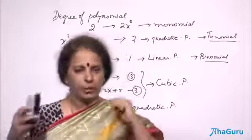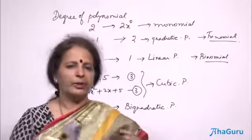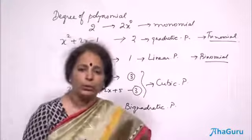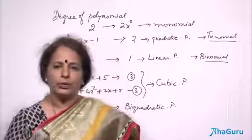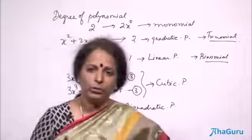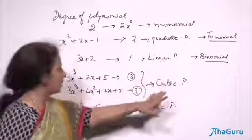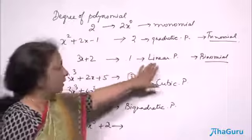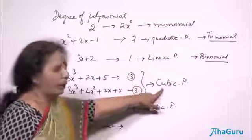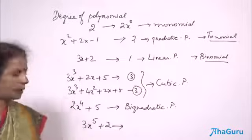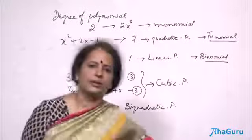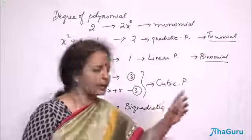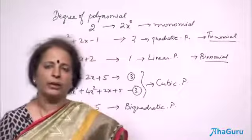When someone says monomial, your mind should immediately go to one term. Binomial means 2 terms, and trinomial means 3 terms. If a question says trinomial but you see only 2 terms, something is wrong. These names are important to understand. The degree names are equally important: quadratic for degree 2, linear for degree 1, cubic for degree 3, and biquadratic for degree 4. These are the standard names to remember before we proceed further with polynomials.